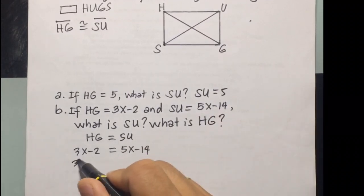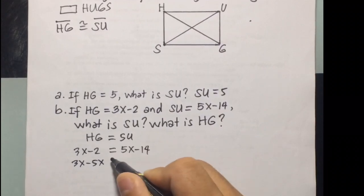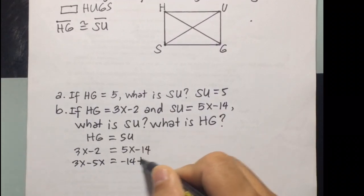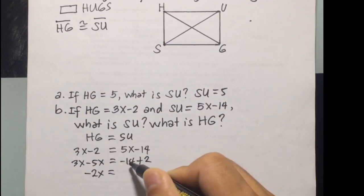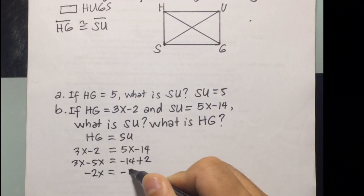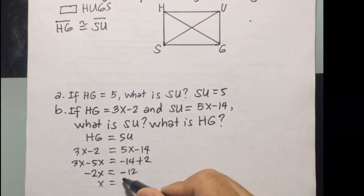Then, combining like terms, we are going to have 3X minus 5X plus negative 14 plus 2. So, 3X minus 5X is negative 2X. Then, negative 14 plus 2 is negative 12. Dividing both sides by negative 2, the answer will be 6.